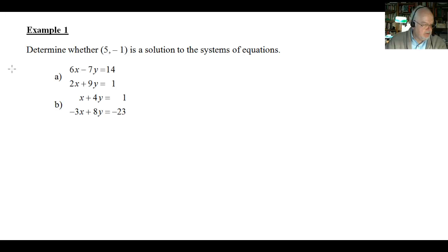So now we have a variation of a problem shown in example 1 on page 282. It says here, determine whether the ordered pair (5, -1) is the solution to the systems of equations. So we've got two systems of equations, each with two equations. The first one has two equations, and the second one has two equations.